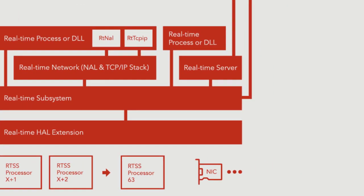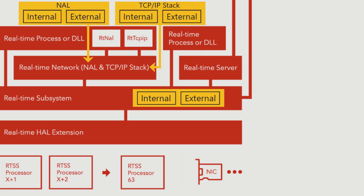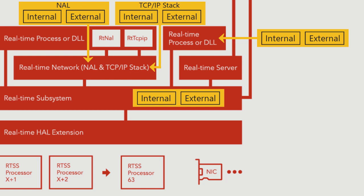The RTX 64 subsystem, network abstraction layer, and RT-TCP/IP stack, along with each RTSS process and Windows proxy process, each has an internal mspace for internal objects and bookkeeping and an external mspace for process allocations.